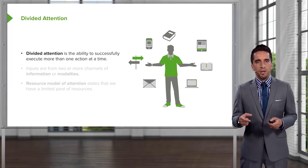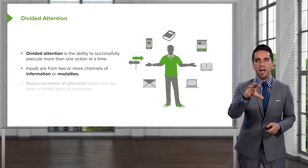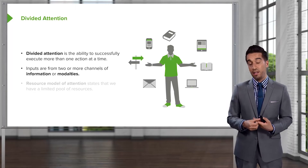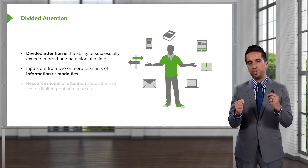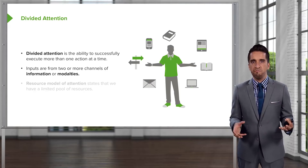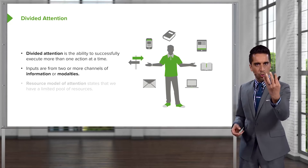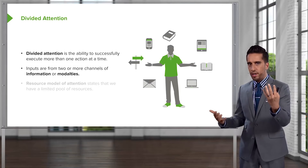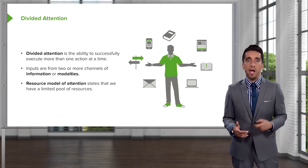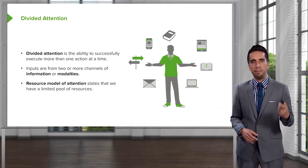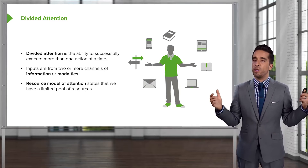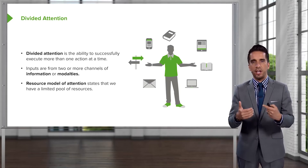What we're talking about is how you manage that and what amount you can actually do. Inputs come from two or more channels of information or modality — it doesn't have to be two visual tasks or two auditory tasks. It can be looking at the road while conversing with somebody: two different things, two different modalities. The resource model of attention states that we have a limited pool of resources, and no matter how many tasks you attempt, you cannot exceed the resources that you have.